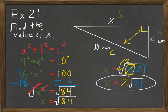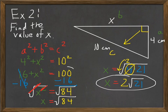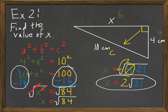What was the main difference between these two examples? In example 1, we ended up adding the squares of the two sides. In example 2, we ended up subtracting the squares of those two sides. This is because we needed to eliminate the 16 on the left hand side. Where the side is that you're looking for makes a big difference.